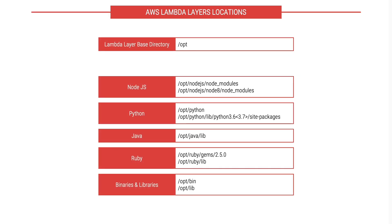Lambda functions look at different folders based on the language you're writing your function in. For Node.js, it looks in node.js/node_modules and also node.js/node8/node_modules. For Python, it looks in a Python folder, or if you're using Python 3.7, it looks in python/lib/python3.7/site-packages. For Java, it is java/lib, and for Ruby, it is ruby/gems/2.5.0 or ruby/lib. It also looks in bin and lib directories for any binary or library files.